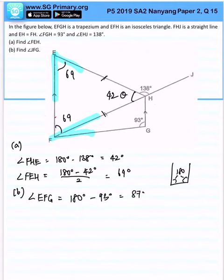So this full angle is actually 87. So to find this unknown angle JFG, wouldn't it be very simple? All we got to do is to simply take angle JFG.